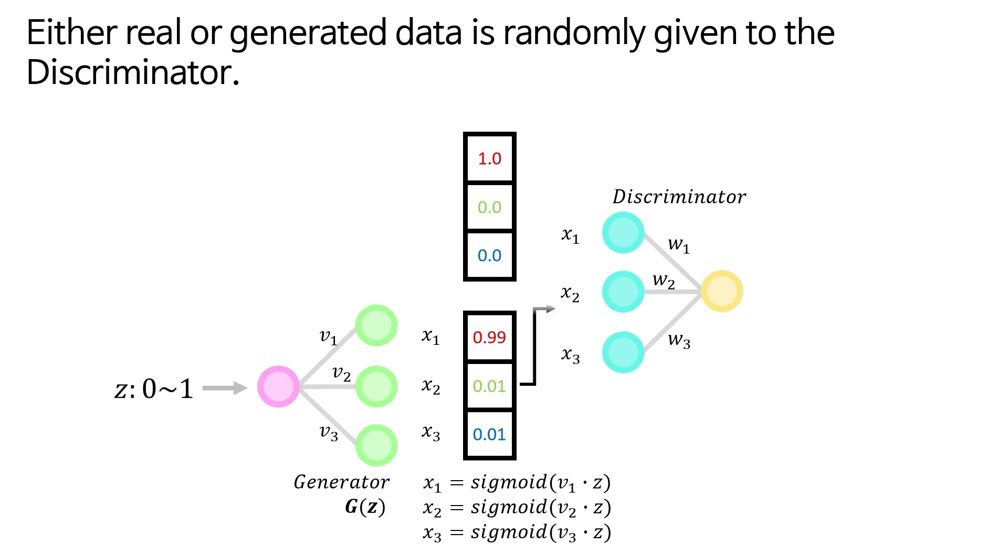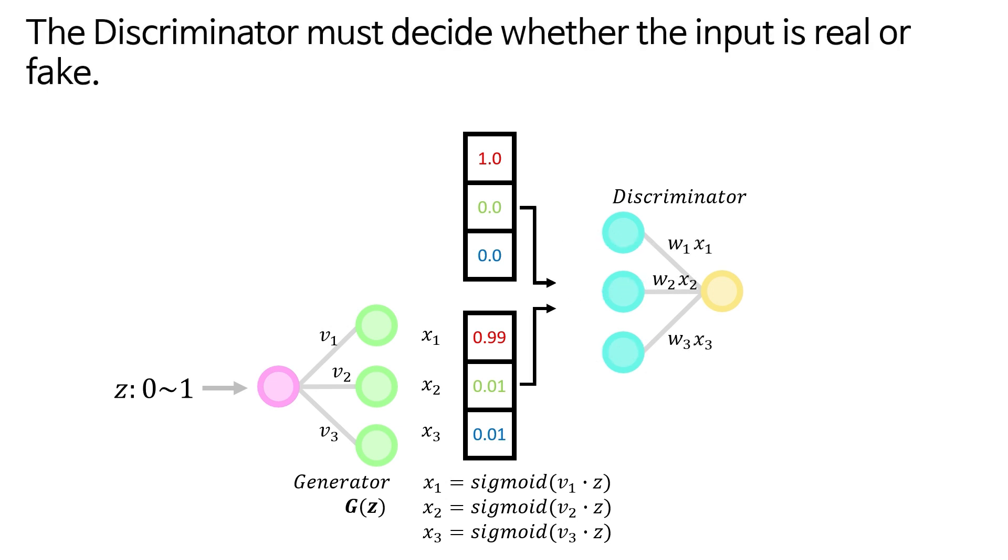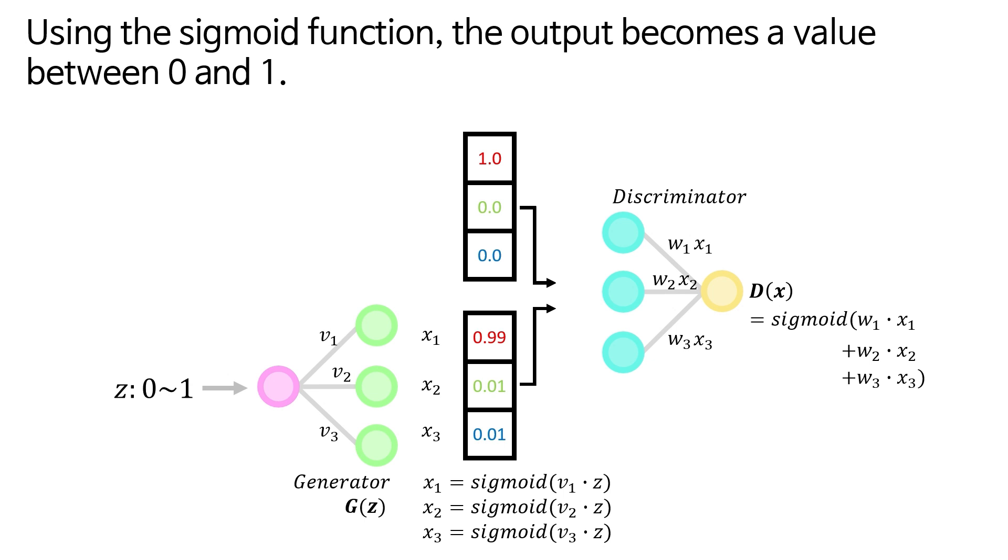Either real or generated data is randomly given to the discriminator. The discriminator must decide whether the input is real or fake. Using the sigmoid function, the output becomes a value between 0 and 1.